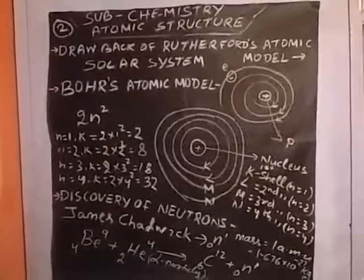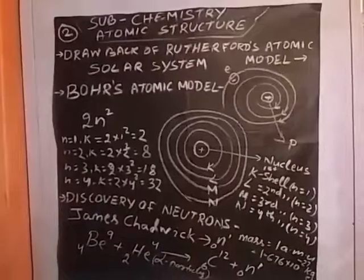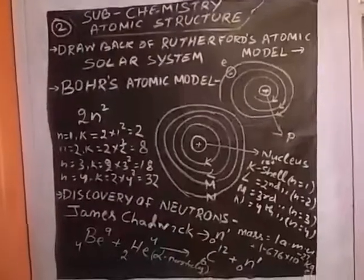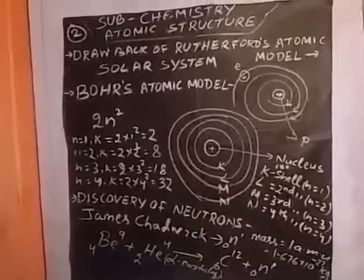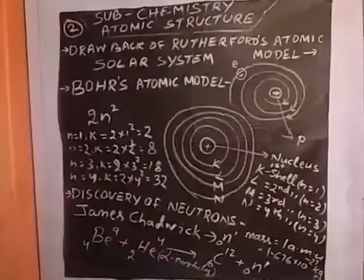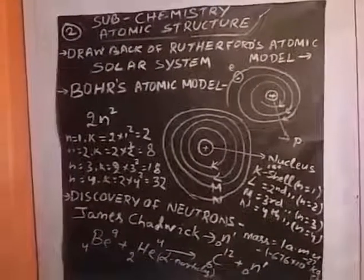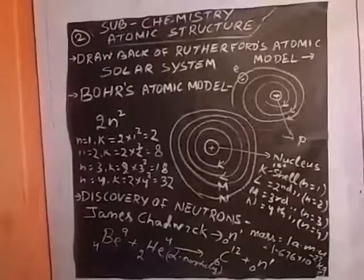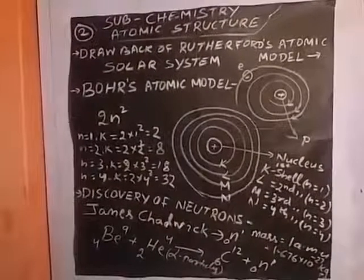Electrons revolve around the nucleus in closed circuits or paths or shells or orbits, but protons are present in the central part or in the nucleus. He suggested that like solar system, the sun is the nucleus and electrons are the planets revolving around the nucleus or around the sun.